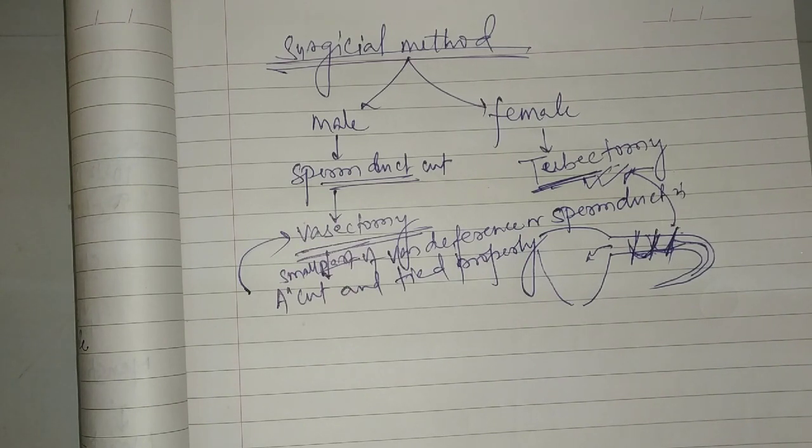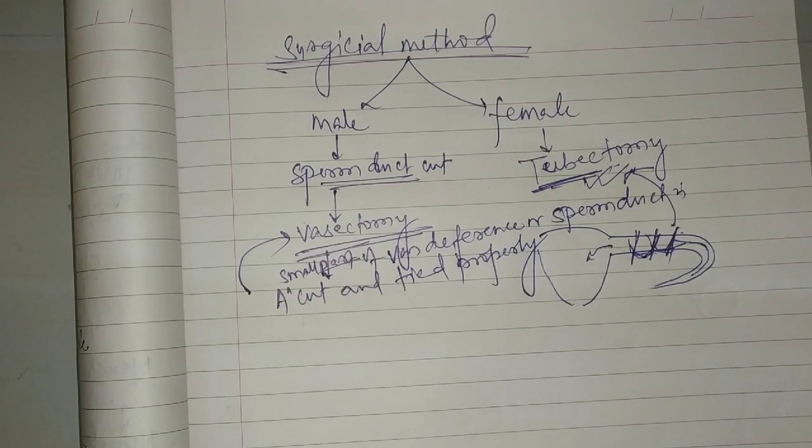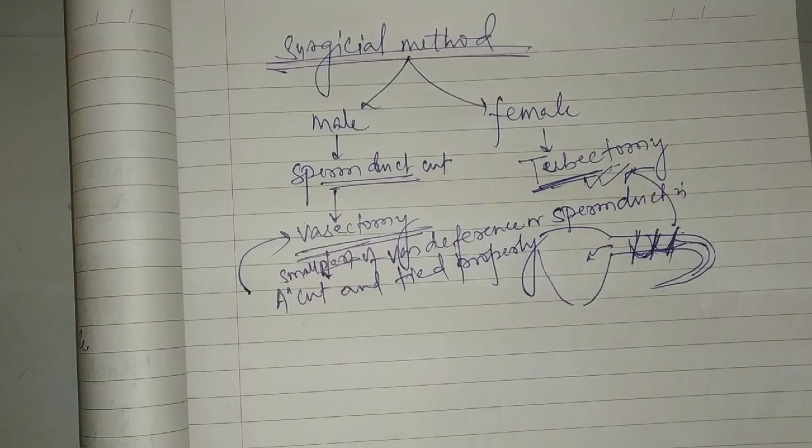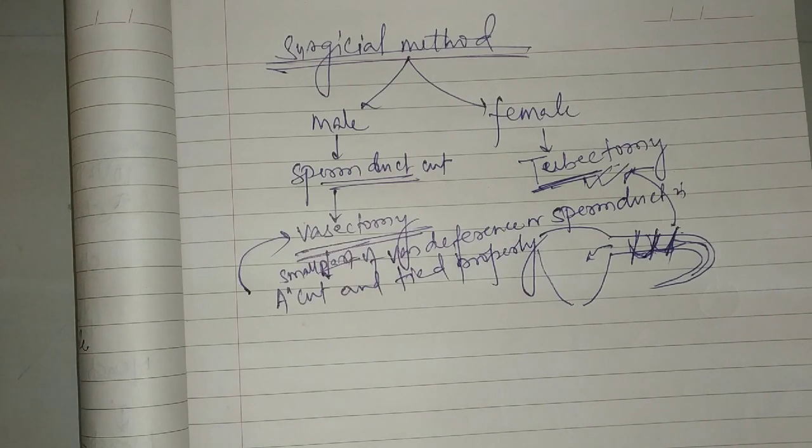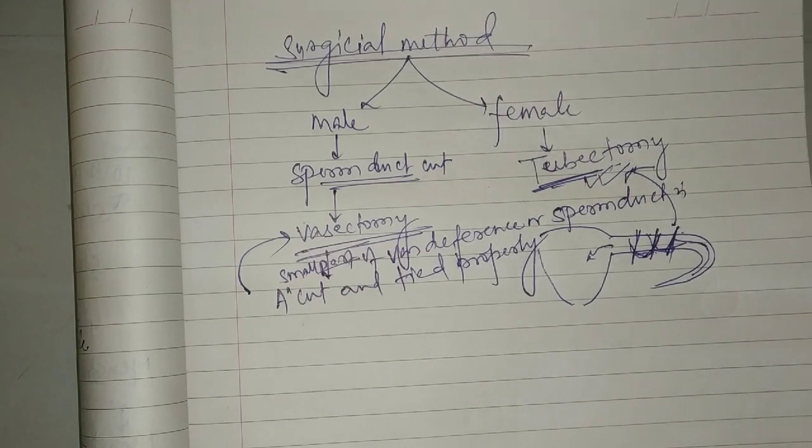This is the method by which we can control pregnancy. What is the surgical method and the physical and chemical method of preventing pregnancy? This is the problem. After this, which portion is left? I will complete it tomorrow and this chapter will be complete. Thank you.